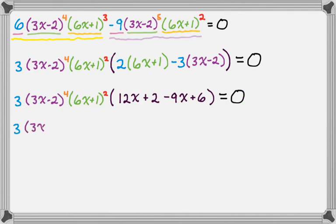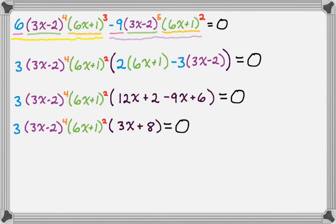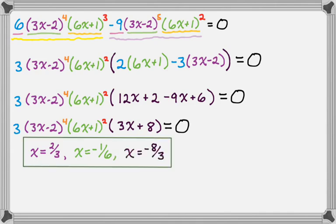Cleaning up the last parentheses: 12x minus 9x is 3x, and 2 plus 6 is 8, so we get 3 times the quantity 3x minus 2 to the 4th times the quantity 6x plus 1 squared, times the quantity 3x plus 8, equals 0. Setting each factor equal to 0: from 3x minus 2 equals 0 I get x equals 2/3; from 6x plus 1 equals 0 I get x equals negative 1/6; and from 3x plus 8 equals 0 I get x equals negative 8/3. Those are my answers. That's the whole process — I hope you found this helpful. Good luck.